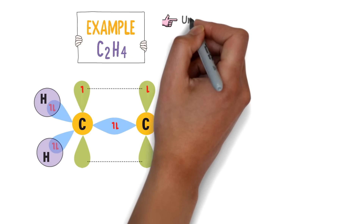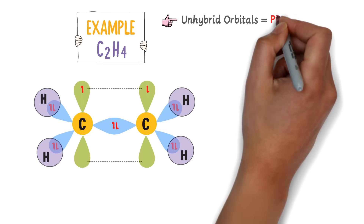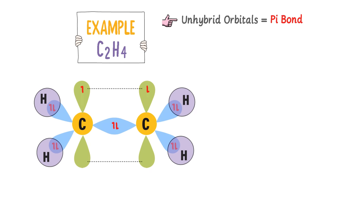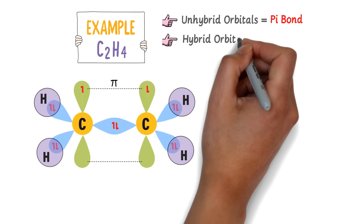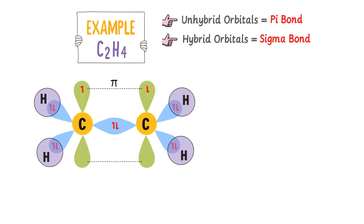Unhybridized orbitals always form pi bonds — for example, the 2Pz forms a pi bond — while hybrid orbitals always form sigma bonds — for example, the SP2 orbitals form sigma bonds. Thus in ethene, there is one pi bond and one sigma bond between the carbon atoms. This is the shape and geometry of a molecule in which carbon has SP2 hybridization.